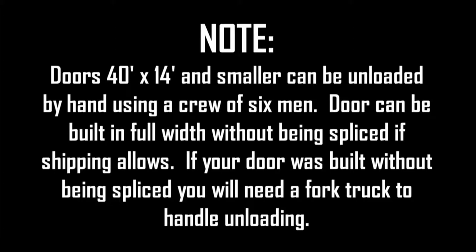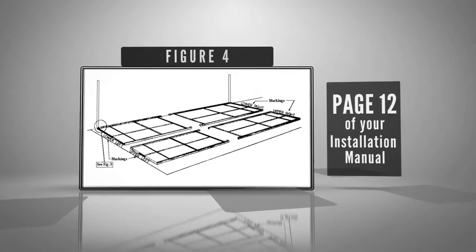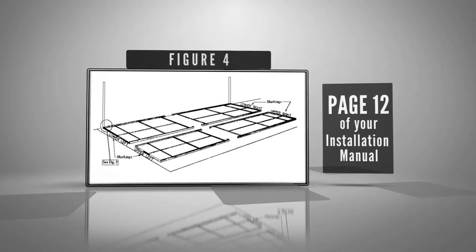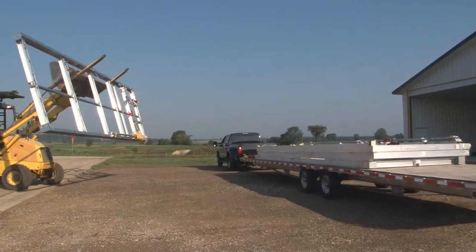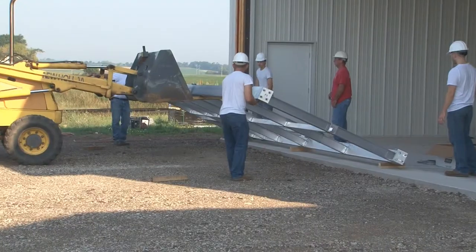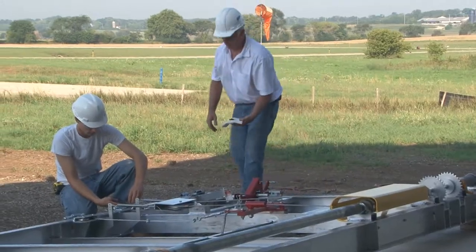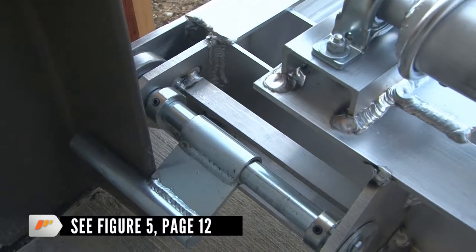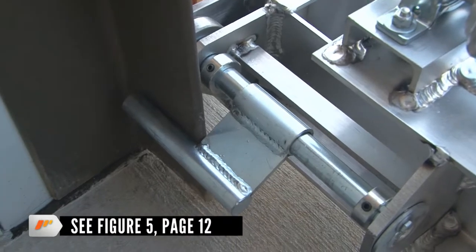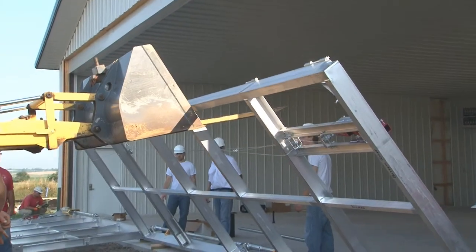Doors can be built in full width without being spliced if shipping allows. If your door was built without being spliced, you'll need a fork truck to handle unloading. The door frames are marked on the outside ends as to their location viewed from the outside looking in. See Figure 4. Start with the bottom first, preferably the section with the service door if so equipped, and lay it in place face down in front of the opening with the bottom roller up to the track and wind pin hooked on backside. See Figure 5.